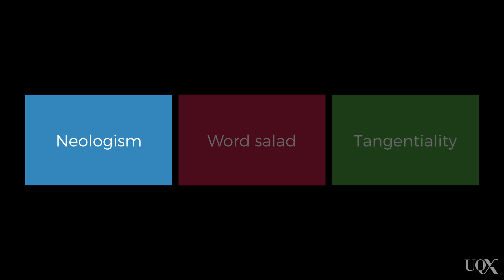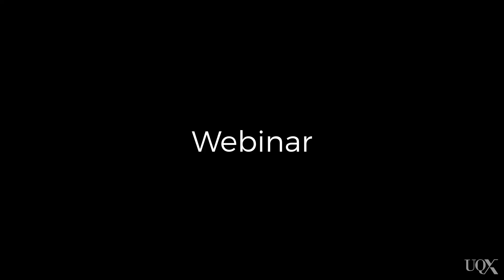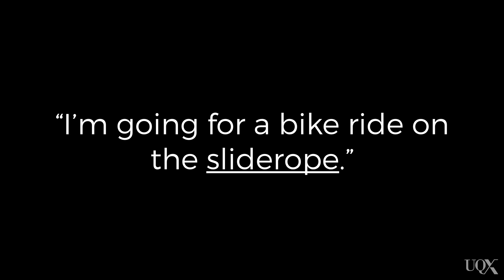The first speech disturbance I want to explain to you is a neologism. This is when a person makes up a word. This word has no meaning in mainstream language, and it's often a combination of two words that do have recognised meaning, or a distortion of a word that has meaning. The word 'webinar' is one example of a neologism — however, because this is a word now largely accepted in mainstream speech, by definition it actually ceases to be a neologism. Another example would be if I said, 'I'm going for a bike ride on the slide rope.' 'Slide rope' is a neologism made up of two words that separately have accepted and recognised meaning, but together are meaningless.